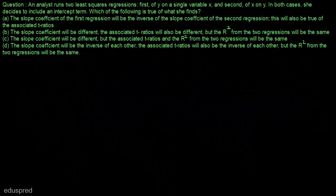In this video, I am going to solve this question. An analyst runs two least squares regressions: first of y on a single variable x, and second of x on y. In both cases, she decides to include an intercept term. Which of the following is true of what she finds? We are given information about the slope coefficients of both regressions, the associated t-ratios, and the R-squared values from both regressions.